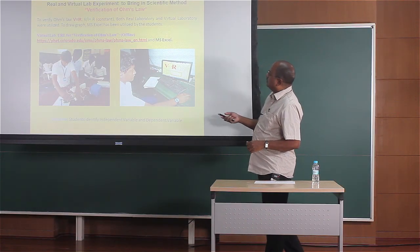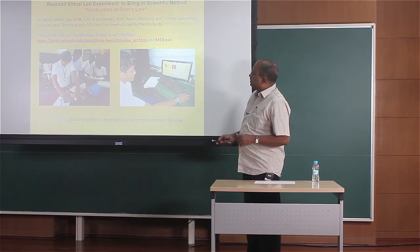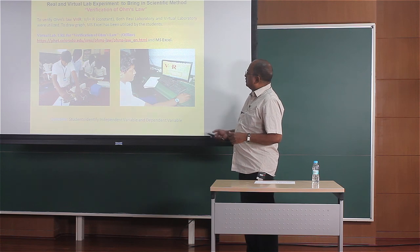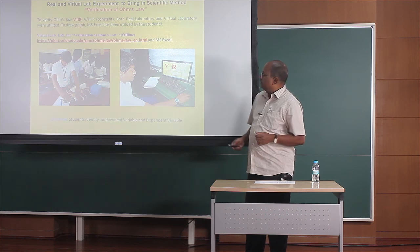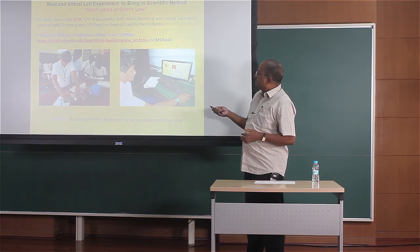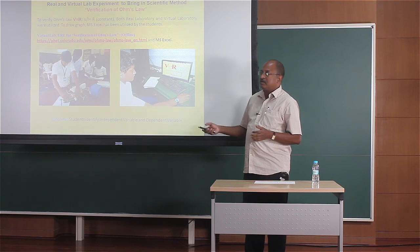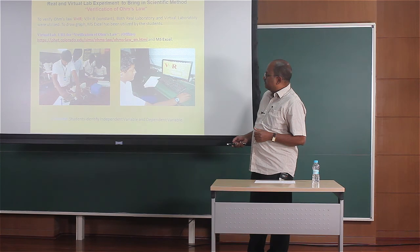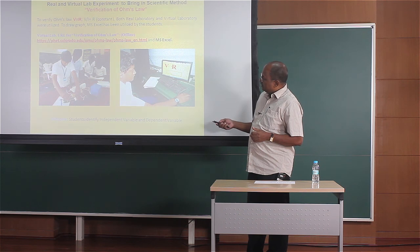This is the URL for the virtual experiment for verification of Ohm's Law. When the student clicks this URL, he could understand the dependent variable and independent variable. In Ohm's Law, V is directly proportional to the current — V is directly proportional to I when R is kept constant. In the real laboratory experiment, the boy makes connections and has hands-on experimentation.